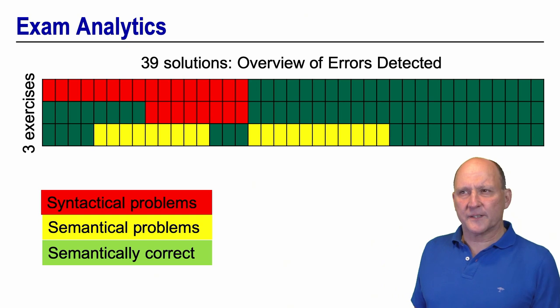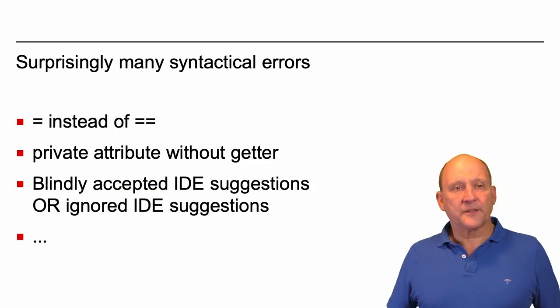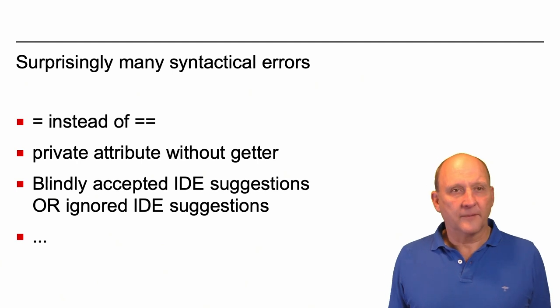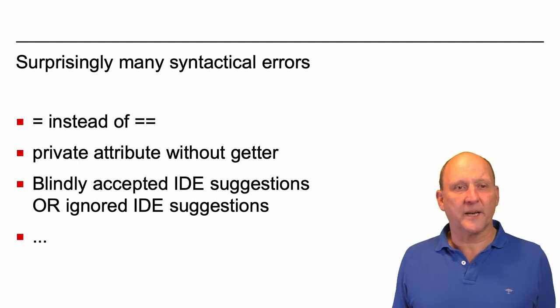And all of the solutions showed more or less significant flaws with respect to professionalism. Well, and that's the parsing in many syntactical errors. We found errors like using one single equal sign instead of two, private attributes without getters, well, and used getters that weren't available, people that had blindly accepted some suggestions of the IDE leading to strange results, or ignored IDE suggestions which might have helped them.